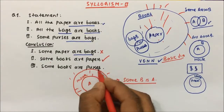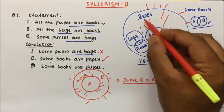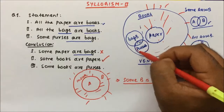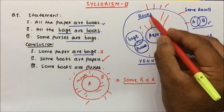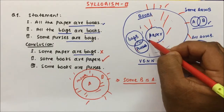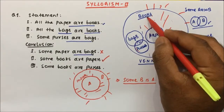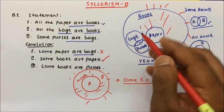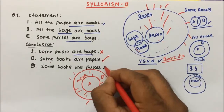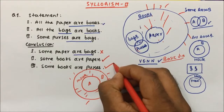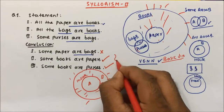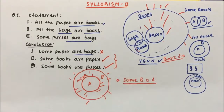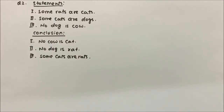Now Conclusion 3: Some books are purses. See, all purses are inside the books, so we can also say some books will be purses. So Conclusion 2 and Conclusion 3 will be correct.